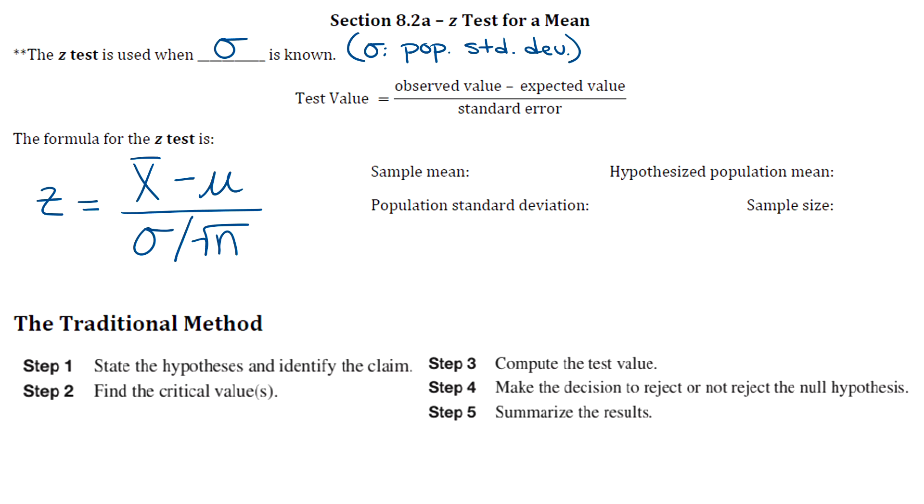Everything stands for what you think it stands for. X bar is our sample mean, mu is the population mean, sigma is the population standard deviation, and our sample size is n.